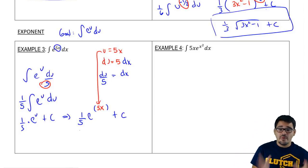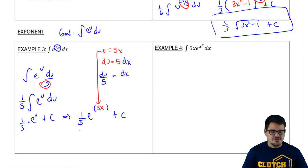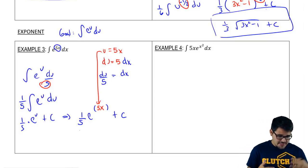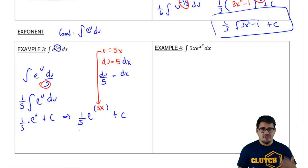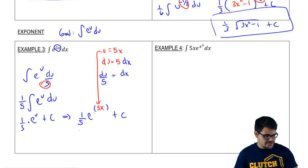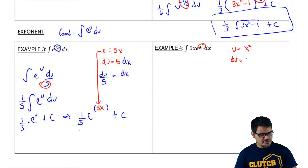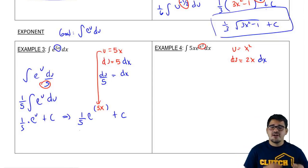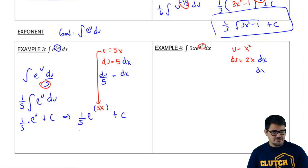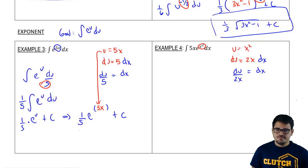If you have any questions because it seems too simple, go ahead and take the derivative, and you'll get back to your original function. Now let's do example 4, which is a little more challenging. The idea and goal are exactly the same — to get to e to the u du. The exponent is always our u, so we have x squared as our u. Our du is going to be 2x dx. I like the dx in blue, so I automatically know the next step is to solve for dx by dividing both sides by 2x, giving du over 2x.